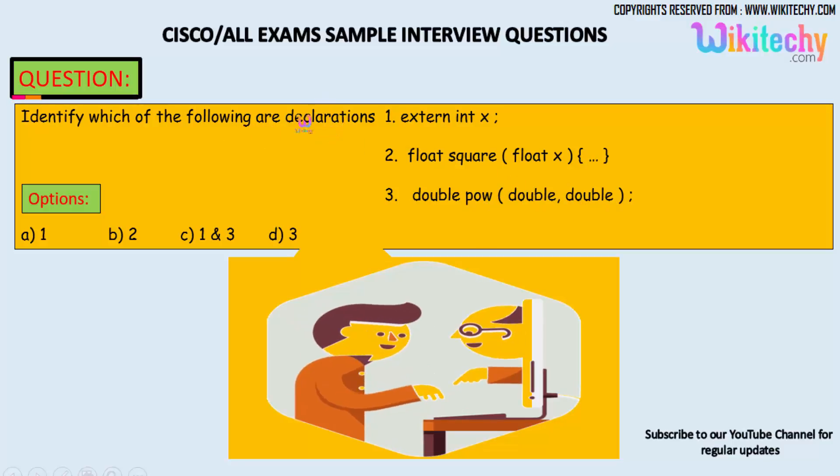So which one is considered as declarations? You can see x, the variable x is declared as extern and is of type integer - maybe this is an answer. Float square of float x - it's a function with the parameter of x as float and returning float. You got the definition here, so it can't be.